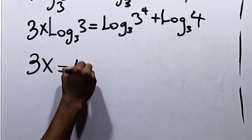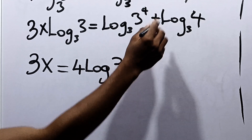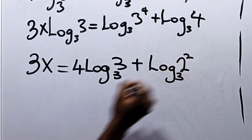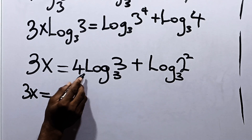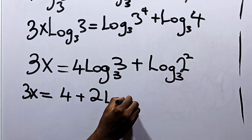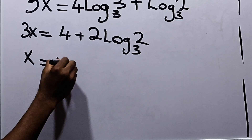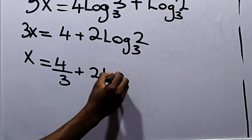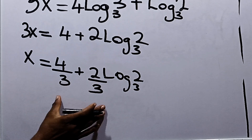So 3x equals 4 multiplied by log base 3 of 3, plus log base 3 of 2 squared. Log base 3 of 3 is 1, so 1 times 4 is 4. And log base 3 of 2 squared becomes 2 multiplied by log base 3 of 2. Therefore, 3x equals 4 plus 2 times log base 3 of 2. Dividing both sides by 3, x equals 4 over 3 plus 2 over 3 times log base 3 of 2. This is our final answer.